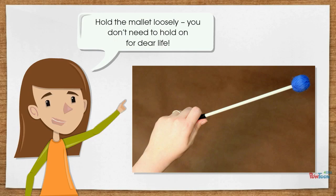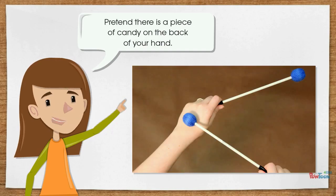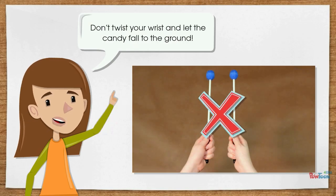Hold the mallet loosely. You don't need to hold on for dear life. Set your hands like you are holding onto the handlebar of a bicycle. Pretend there is a piece of candy on the back of your hand. Don't twist your wrist and let the candy fall to the ground.